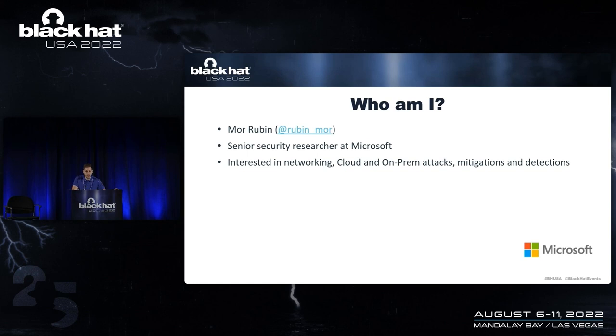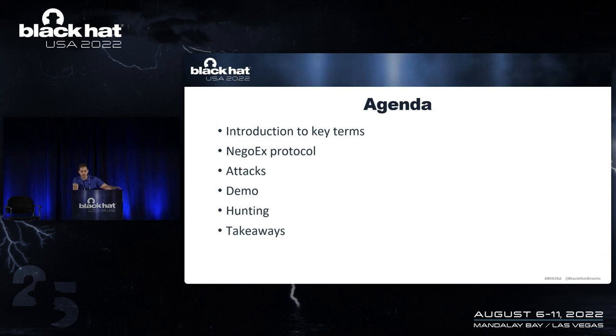Welcome to my session. My name is Mo Rubin and I am a senior security researcher at Microsoft. I'm mostly interested in finding new attack vectors in on-prem and cloud environments, mostly related to networking. In this session we are going to show a new way to perform lateral movement, which involves a bit of on-prem, a bit of cloud, and mostly networking.